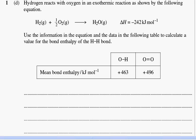This question looks a little bit complex, but actually it's not as complex as it looks. It says hydrogen reacts with oxygen in an exothermic reaction, so the system is losing heat and energy, as shown by the following equation. Use the information in the equation and the data in the following table to calculate a value for the bond enthalpy of the H-H bond.